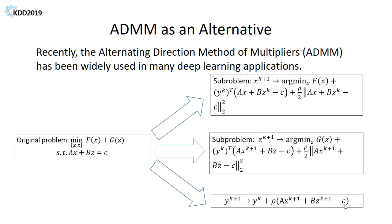ADMM is immune to gradient vanishing and poor conditioning, so it can be considered as an alternative for deep learning optimizers.